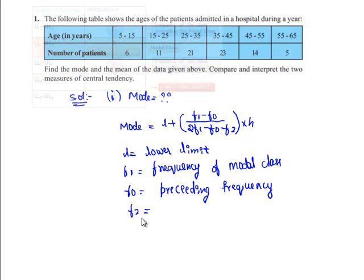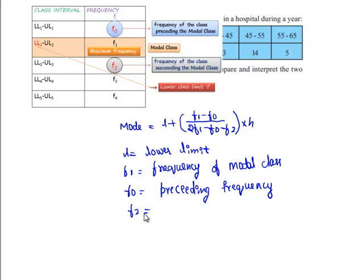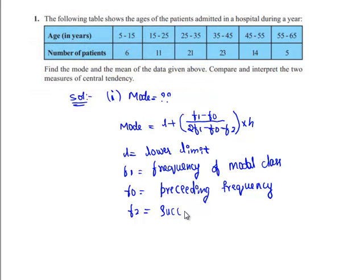F2 is the frequency succeeding the frequency of the modal class, known as the succeeding frequency, and H is the class size.